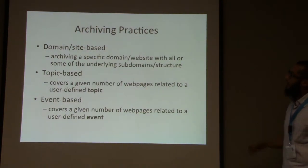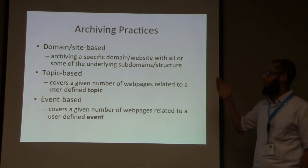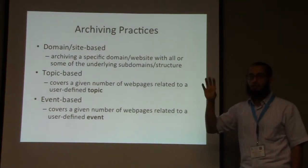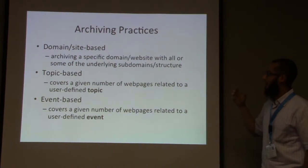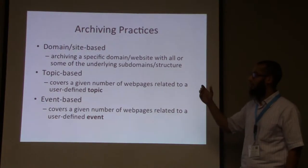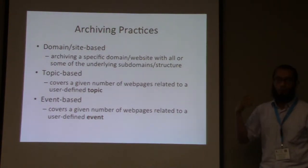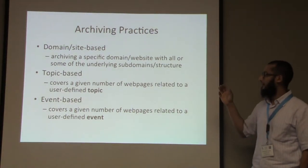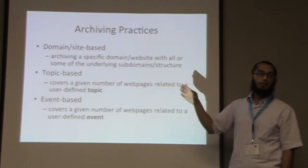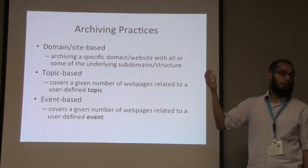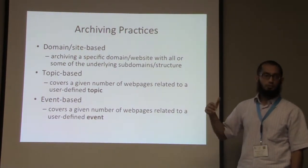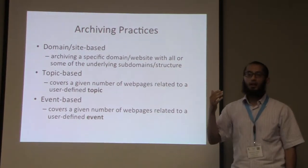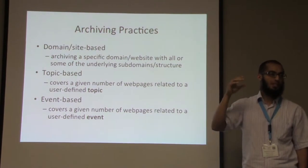During my literature review, I found different kinds of archiving practices. The first is domain or site-based, where librarians and state agencies use an archiving tool to archive certain websites or substructures relevant to them. The second is crawler-based or topic-based archiving, where you use a crawler to crawl web pages related to a topic. The third and very specific way is event-based, since an event is a specific instance of a topic — for example, not just earthquakes as a topic, but the Japan earthquake that happened in 2011.